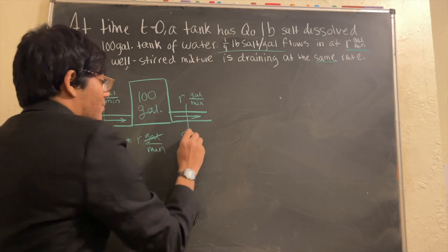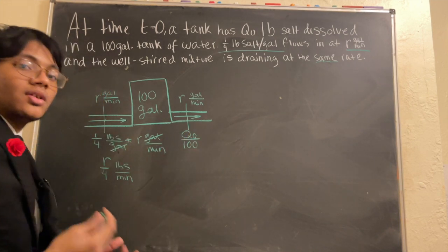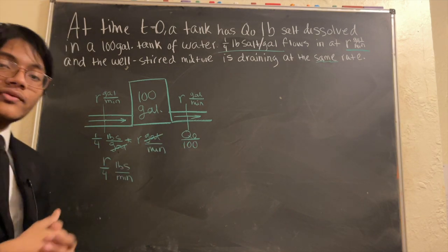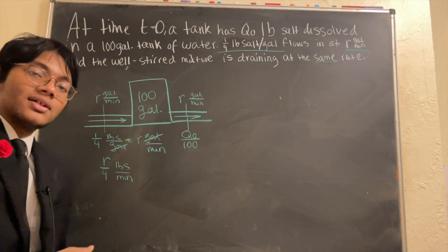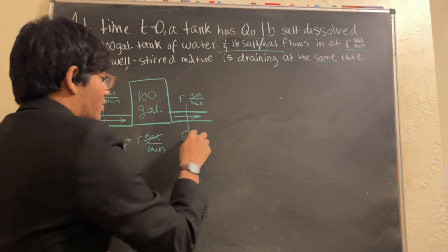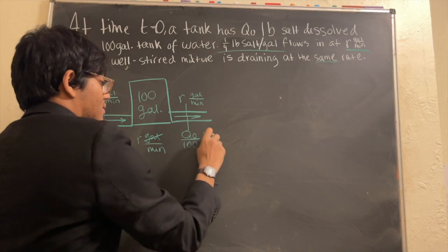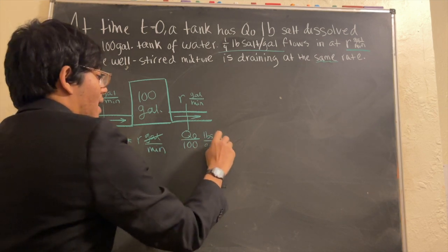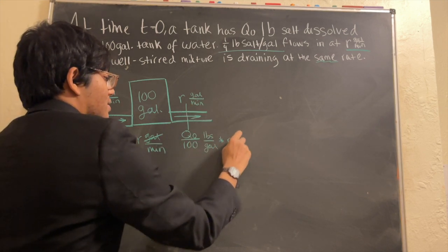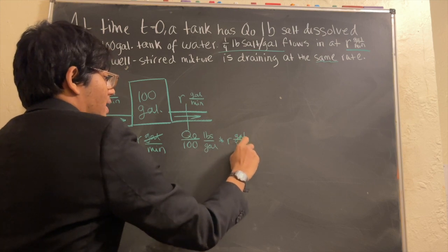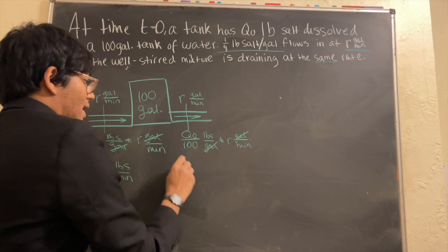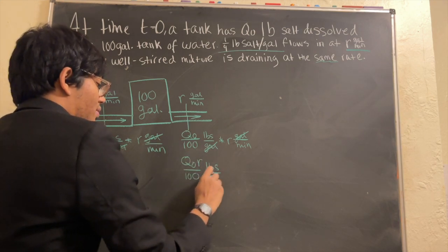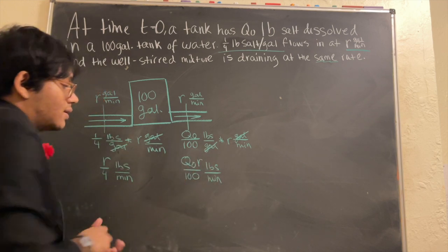The numerator is going to be the salt concentration we start with. And that makes sense. Compare one over four to q naught over 100. Here's our total volume. Here's our salt concentration. And now we're going to put the units, which is going to be pounds per gallon. And once again, if I multiply this by my rate, which is r gallons per minute, then gallons cancel out. I'm left with q naught over 100 times r pounds per minute.